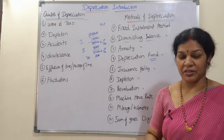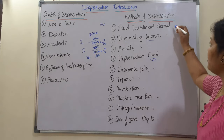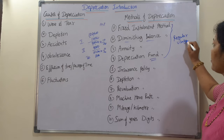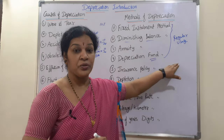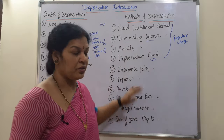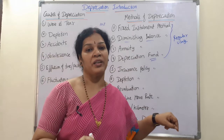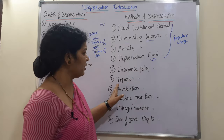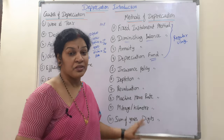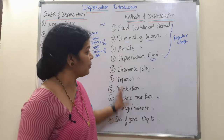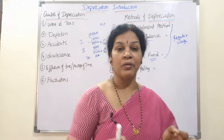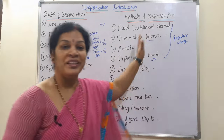Apart from these four methods, there are six more depreciation methods, but in regular usage only the first four are commonly followed. For most courses — BCom, BBM, BBA — the syllabus covers only these four methods. The other methods include the insurance policy method, depletion method, revaluation method, machine hour method, mileage/kilometer method, and sum of years digits method — these are not much in popular use.